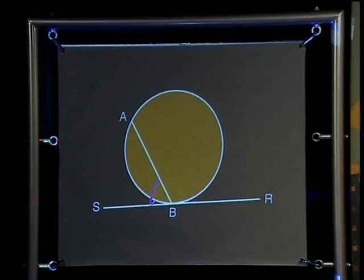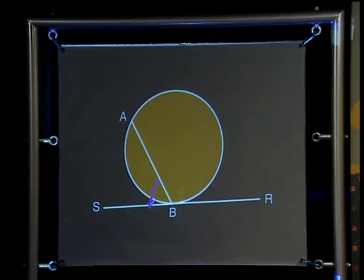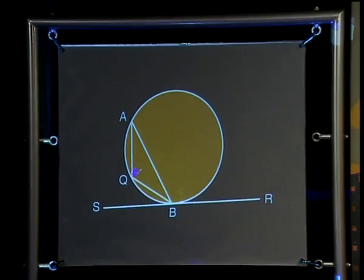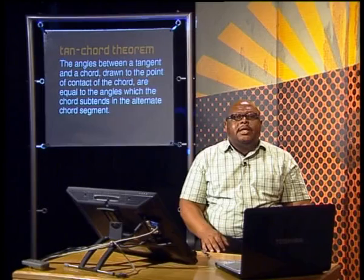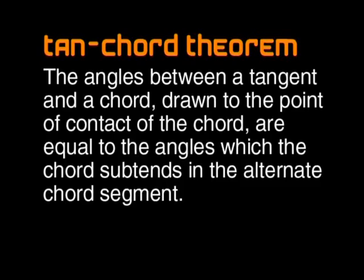We looked at angle ABS as the angle between the tangent and the chord. However, we can also talk about the bigger angle at B. Angle ABR is also an angle between the tangent and the chord. An angle in the alternate segment to angle ABR would be angle Q. Now we are ready to look at the theorem statement again. The tan chord theorem states that the angles between a tangent and a chord drawn to the point of contact of the chord are equal to the angles which the chord subtends in the alternate chord segment.